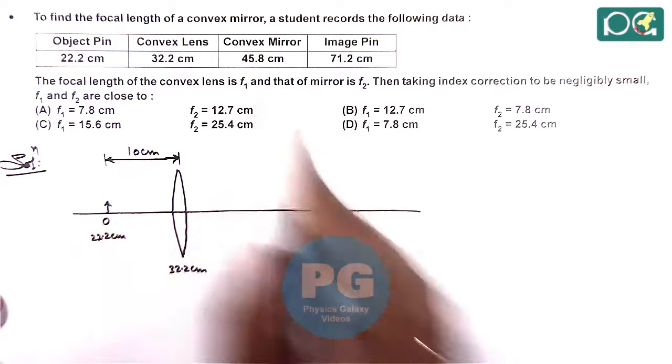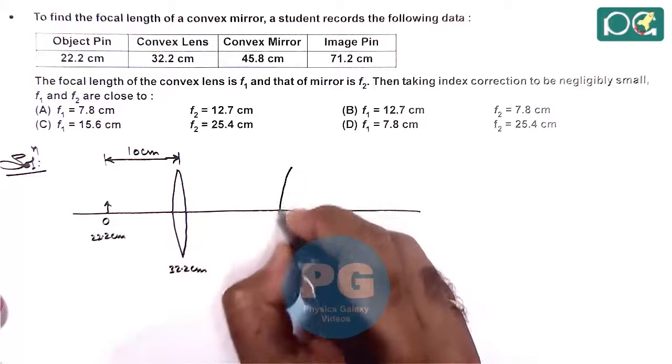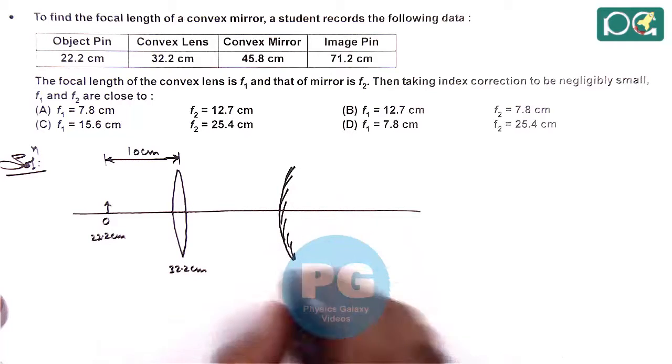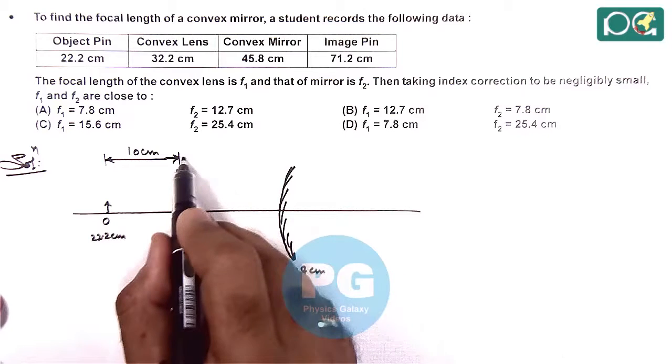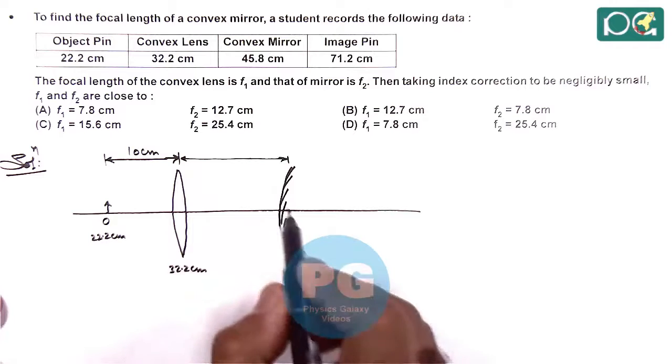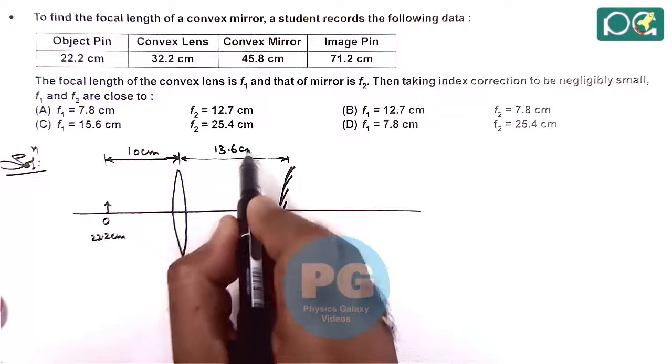Then convex mirror is located, which is located at 45.8 centimeter. So the separation between lens and mirror here is 13.6 centimeter.